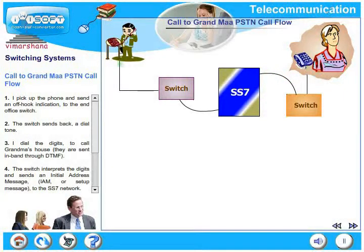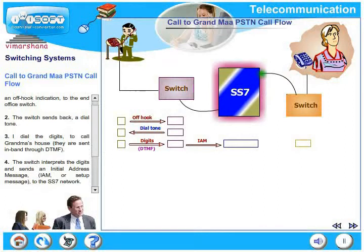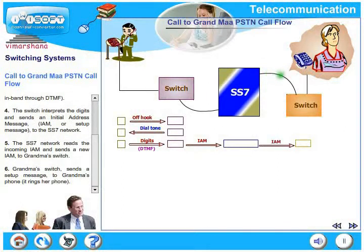What are the call flow sequences? Action 1: I pick up the phone and send an off-hook indication to my end of the switch. The switch sends back a dial tone. I dial the digits to call grandma's house; they are sent in-band through DTMF. Next, the switch interprets the digits and sends an Initial Address Message (IAM), or setup message, to the SS7 network. The SS7 network reads the incoming IAM and sends a new IAM to grandma's switch.